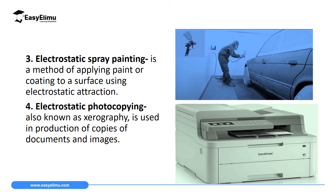The third application of electrostatic charges is electrostatic spray painting. In this application they apply the law of electrostatics that unlike charges attract. They make the paint positively charged and the surface to be painted — like a car part — negatively charged by scratching the surface of that part. When the positively charged paint is applied to the negatively charged surface, there is an electrostatic attraction where the paint sticks strongly to the surface being painted.